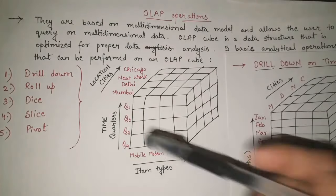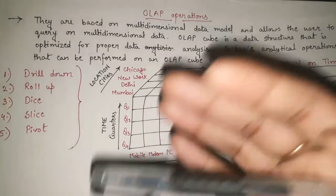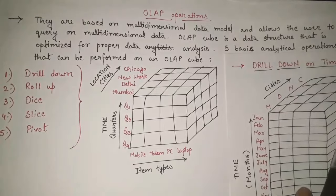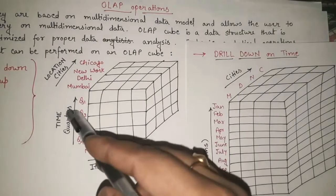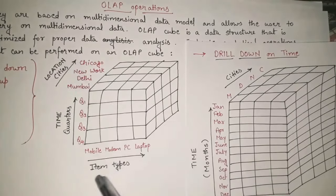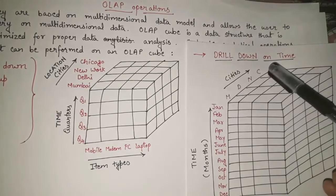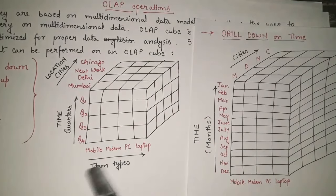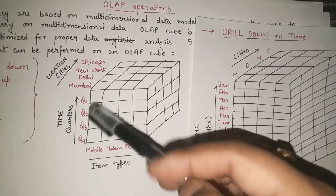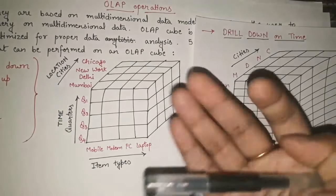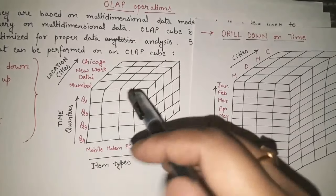For example, if we are told to apply drill down on time: time is one of the three dimensions — location, time, and item types. We want detailed information for the time dimension. The other dimensions, location and item types, remain as they are — the four cities stay the same, the four item types stay the same. Previously time was given in terms of quarters Q1, Q2, Q3, Q4, but now we want more detail.